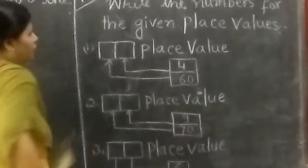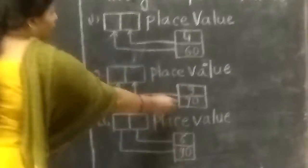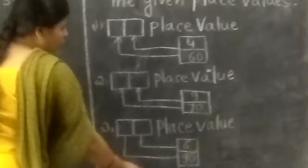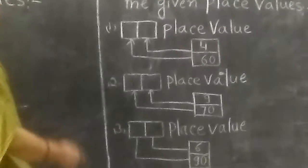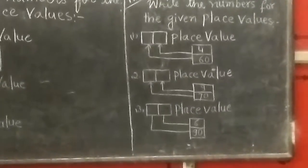60 is 4. 70 is a place value. 90 is 6 place value. We put one again. Place value, okay? Thank you.